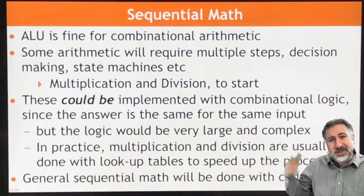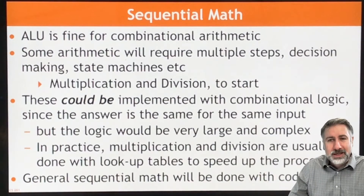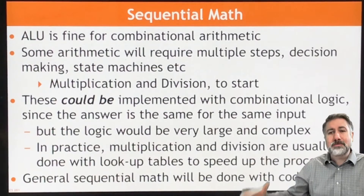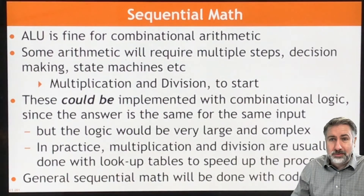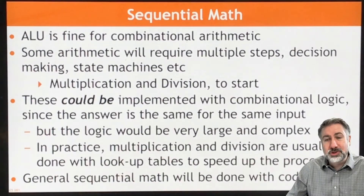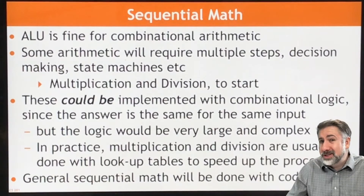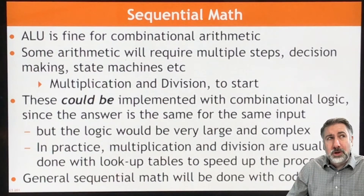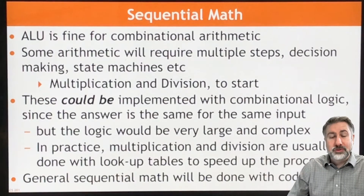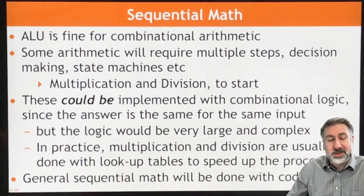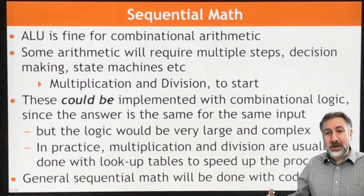Multiplication is a sequential process, even though the result is combinational. What a lot of computers do is keep a big lookup table for really common multiplication problems. You can't do all problems in a lookup table, though — for two 8-bit numbers there are 256 times 256 possible results, which is manageable, but for two 64-bit numbers you'd have 2 to the 64 times 2 to the 64 possible results, which is 2 to the 128 — an enormous amount of space on a chip.